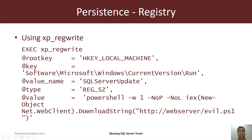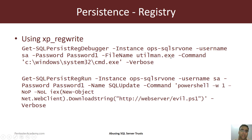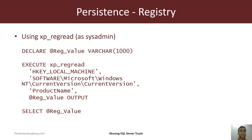If our SQL Server service account runs with local admin privileges, we can create a registry key — 'SQL Server Update' — in the Run registry key, which runs whenever the machine reboots and downloads and executes a payload. Alternatively, if we have local admin privileges, we can add a debugger to utilman.exe. Utilman.exe runs with SYSTEM privileges when you press Windows+U on unlocked machines. Instead of cmd.exe, we can always download and execute a PowerShell script.